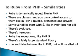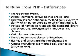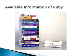Ruby has exceptions like PHP 5. There is a fairly large standard library. There is strong typing. Parentheses are optional in method calls, except to clarify which parameters go with method calls. Instead of naming conventions like underscores, the standard libraries and extensions are organized in modules and classes. Reflection is an inheritance capability of objects. You don't need to use a random class like in PHP 5. Variables are references. There are no abstract classes or interfaces. Hashes and arrays are not interchangeable. Only false and null are false. Almost everything is a method call, even a phrase.